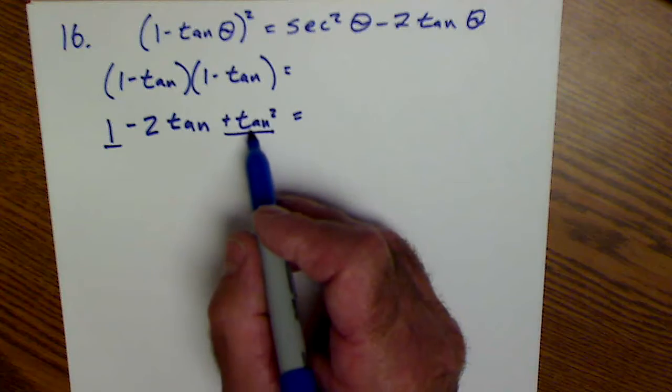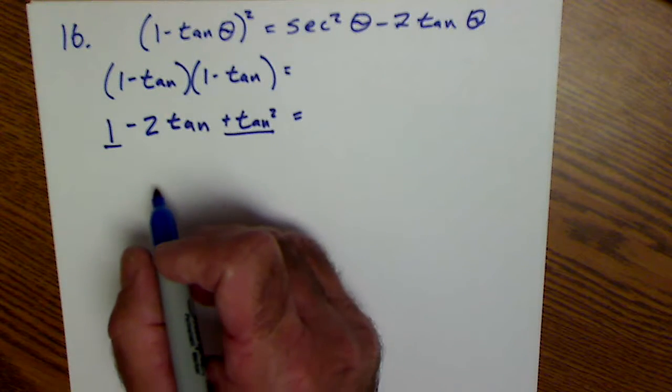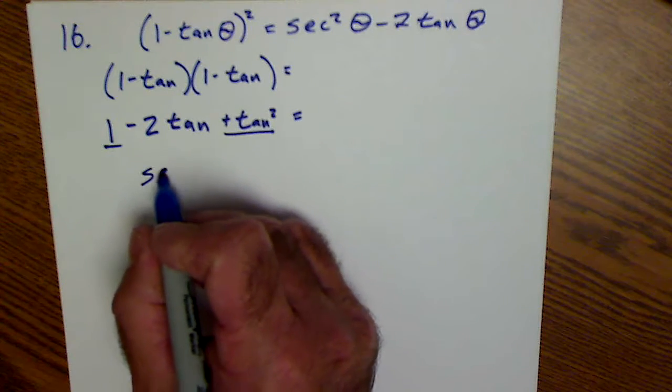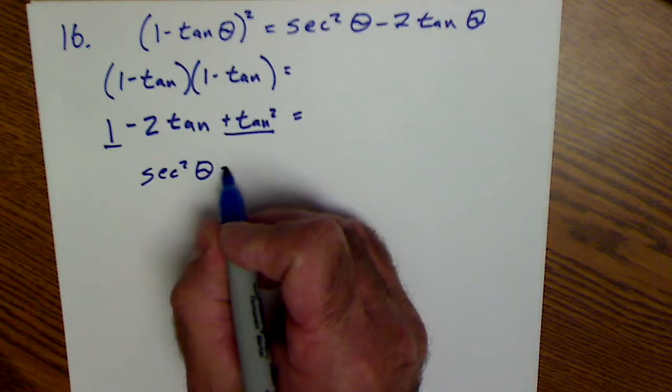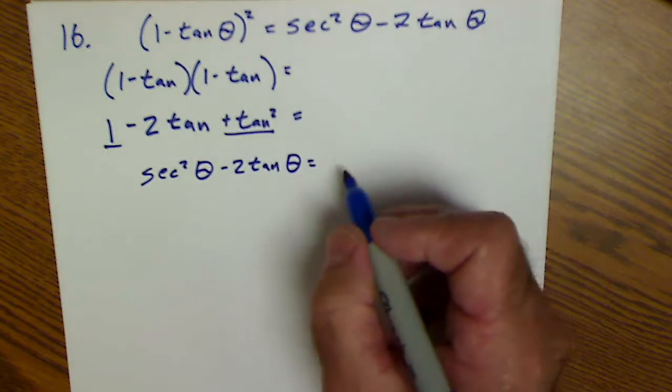So I take that and that and I use Pythagorean identity with tangent squared and I replace that with secant squared of theta minus 2 tan of theta. And then that's what I was asked to prove.